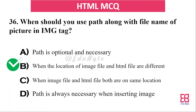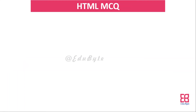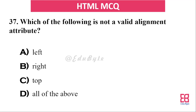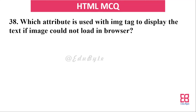Question thirty-three: which of the following is not a valid alignment attribute value? The options include left, right, top, and all of the above. The correct answer is top — top is not a valid alignment attribute value.